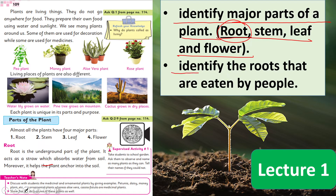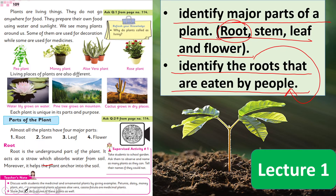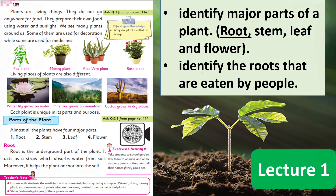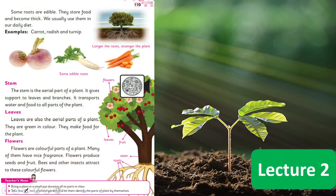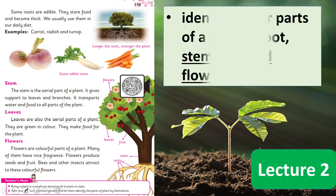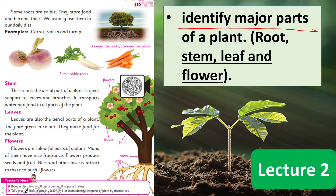Students will also be able to identify the roots that are eaten by people as a vegetable — roots jo log khaate hain — we will also study about that in this lecture. Next is Lecture number 2, in which students will again identify the major parts of a plant and will discuss the stem, leaf, and flower.